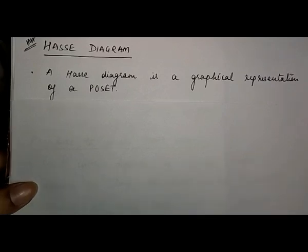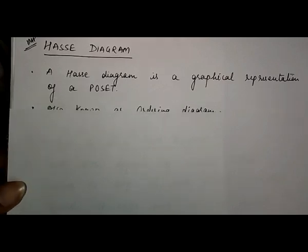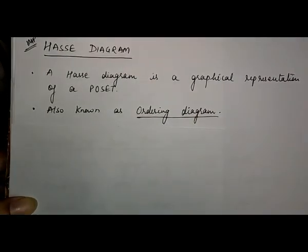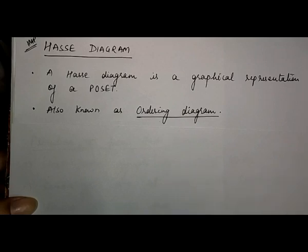We use a Hesse diagram to represent the POSET graphically. This Hesse diagram is also known as an ordering diagram. It shows how the elements of a POSET follow an order — which element comes first, then next, and so on. It gives a graphical representation of a POSET.